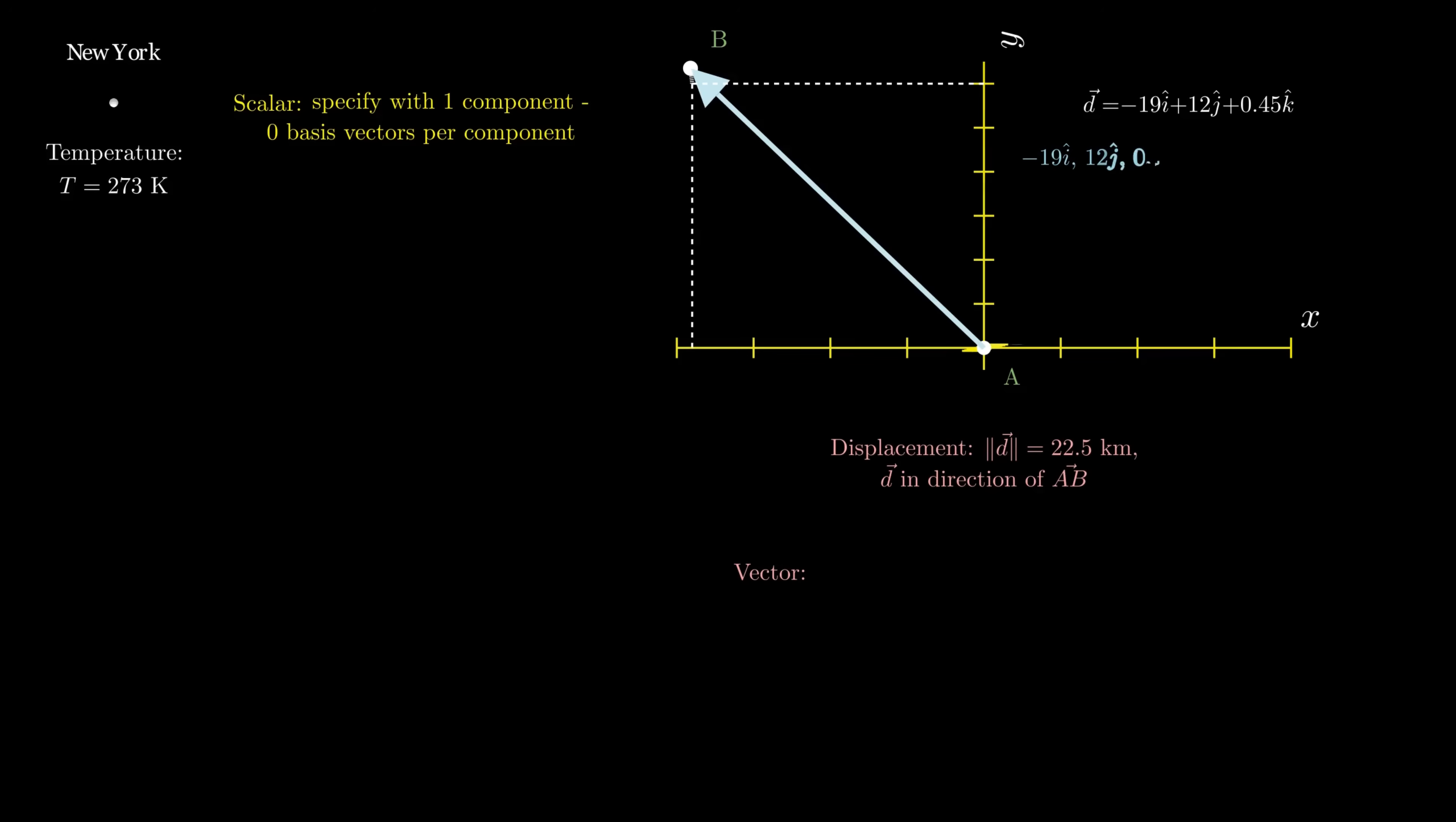Each of these three vectors that's added to give you the total displacement is called a component vector of the displacement. This means that the vector that describes the displacement has three components, with one basis vector for each component. I've got the basis vector i for the 19 kilometer west component, the basis vector j for the 12 kilometer north component, and the basis vector k for the 0.45 kilometers up component. I've got one basis vector corresponding to each component.